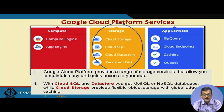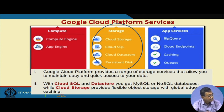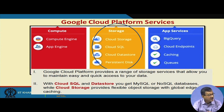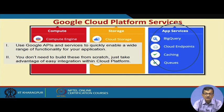Another vertical is storage. GCP provides a variety of options: Cloud Storage, Cloud SQL, Cloud Datastore, and Persistent Disk. It provides a range of storage services that allow you to maintain easy, quick access to your data. With Cloud SQL and Cloud Datastore, you get MySQL and NoSQL databases, while Cloud Storage provides flexible object storage with global edge caching, meaning you can store and access data across the globe.